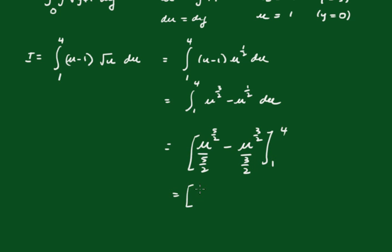And that becomes 2 fifths u to the 5 over 2 minus 2 thirds u to the 3 over 2, between 4 and 1.